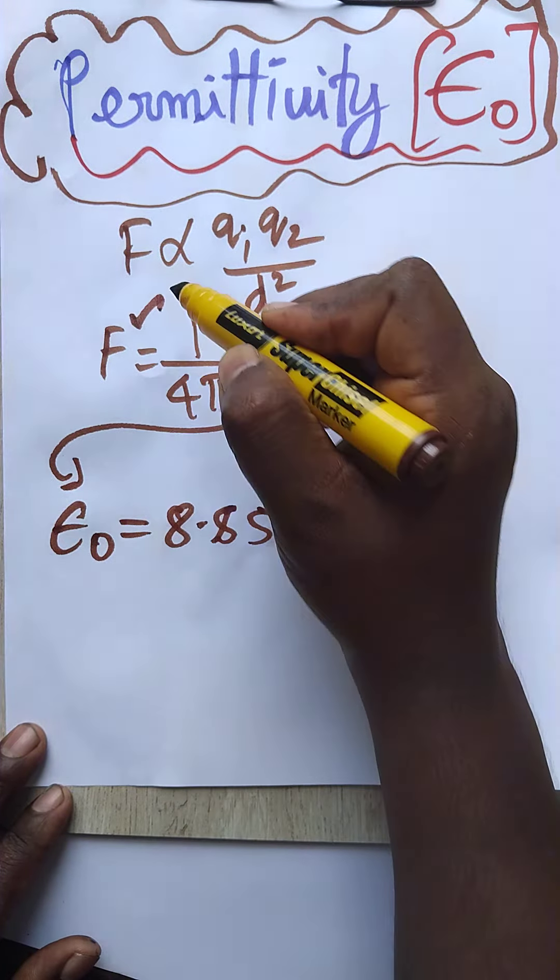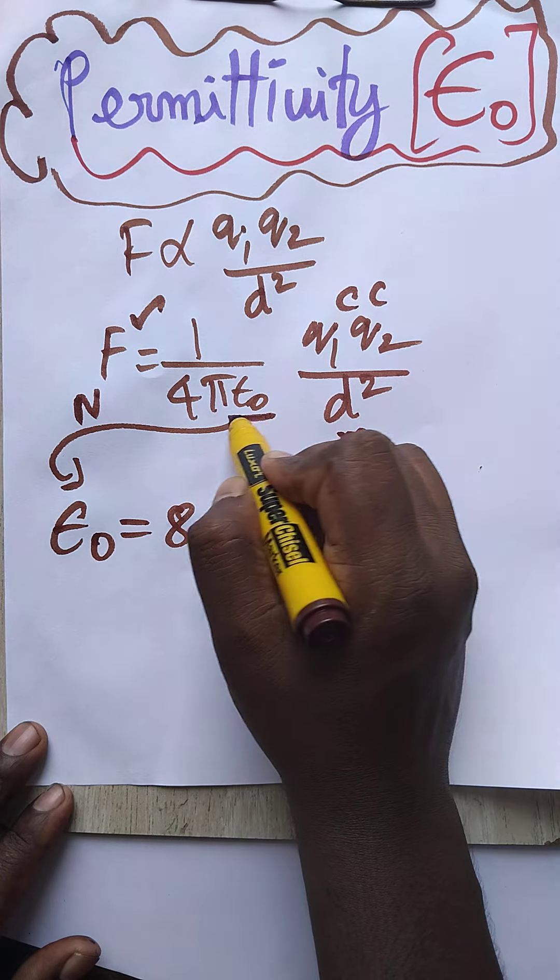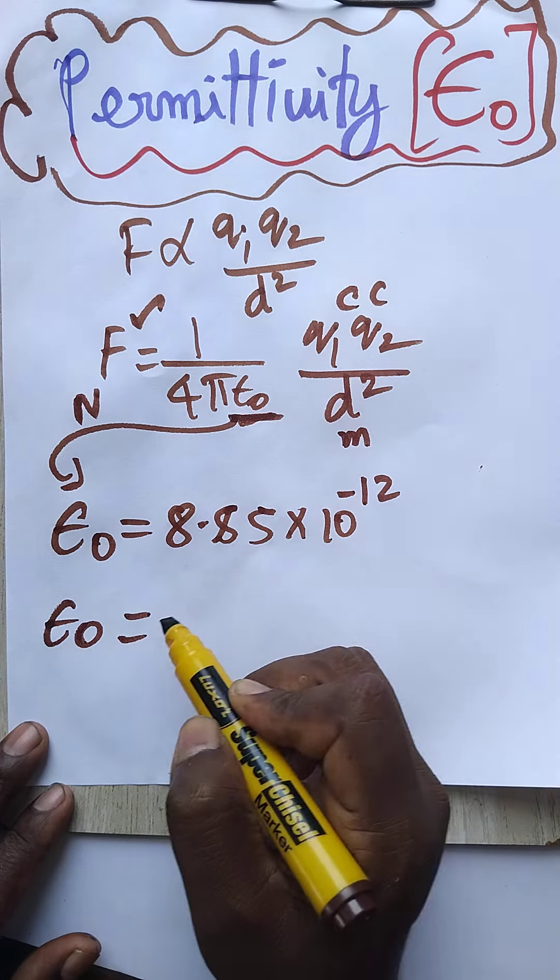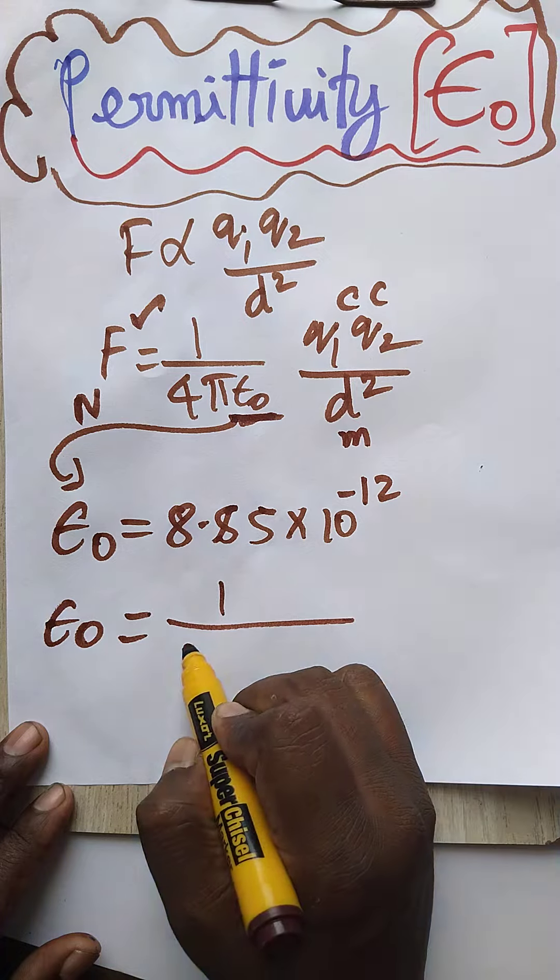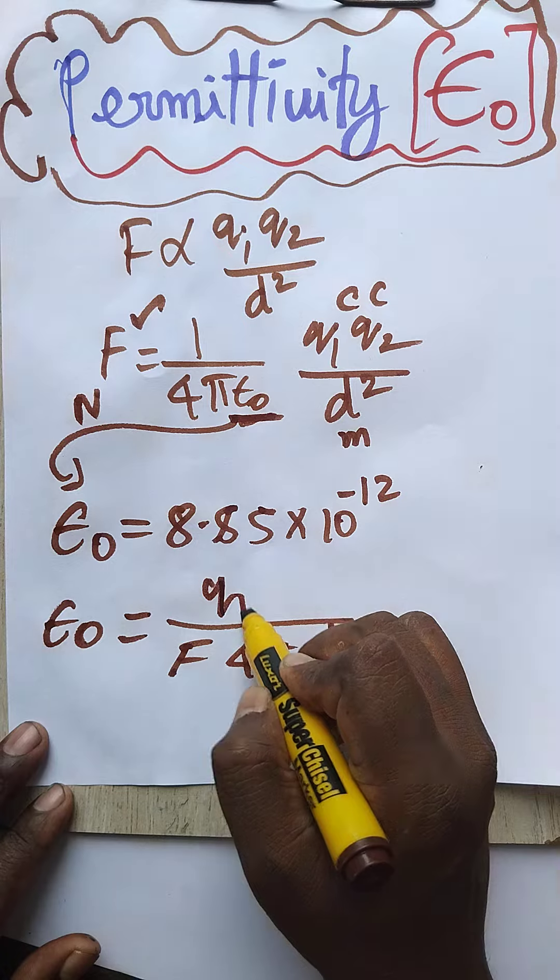This unit is Newton, this unit is Coulombs, this unit is distance. We don't know this one, ε₀. So ε₀ is equal to 1 divided by F × 4πd² × q₁q₂.